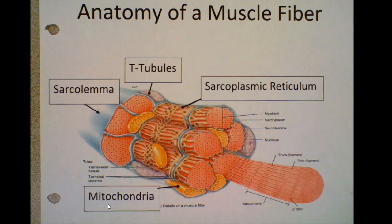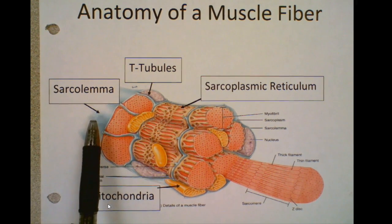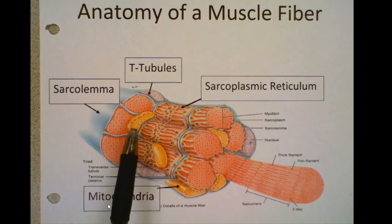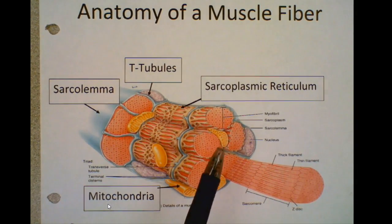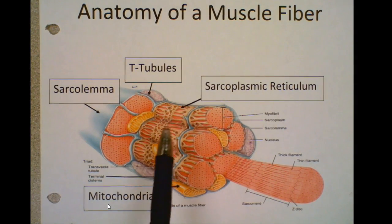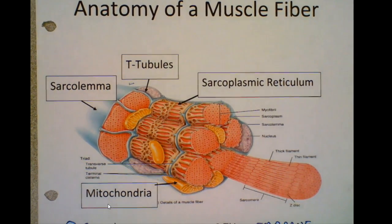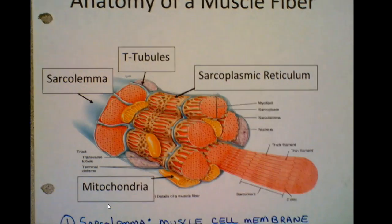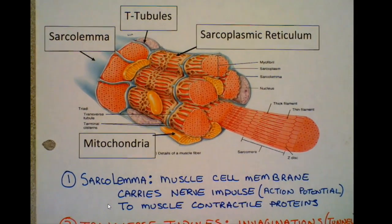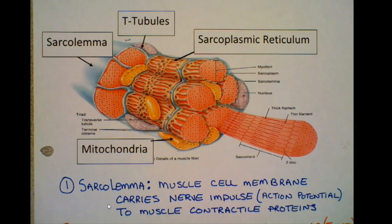A muscle fiber is a cell — it's just a collection of embryonic cells that have fused. So it does still have things like a plasma membrane. You can see these little yellow sausages, which are mitochondria. The little webbing is a variation of the endoplasmic reticulum called sarcoplasmic reticulum. The first thing to note is that our plasma membrane here is not called a plasma membrane — it's called a sarcolemma.